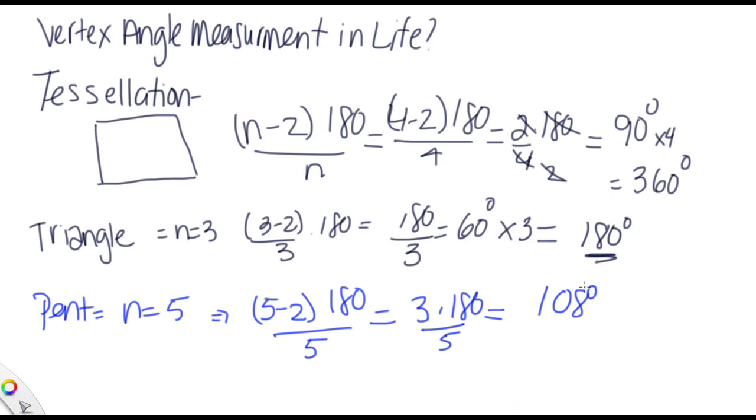Now we take, we know that the vertex angle is 108. We multiply that by how many sides we have. And we wound up getting that the entire pentagon equals 540 degrees. So now we have to think, can a triangle go into a pentagon? Well, that's the same as saying, can 180 degrees go into 540 degrees?